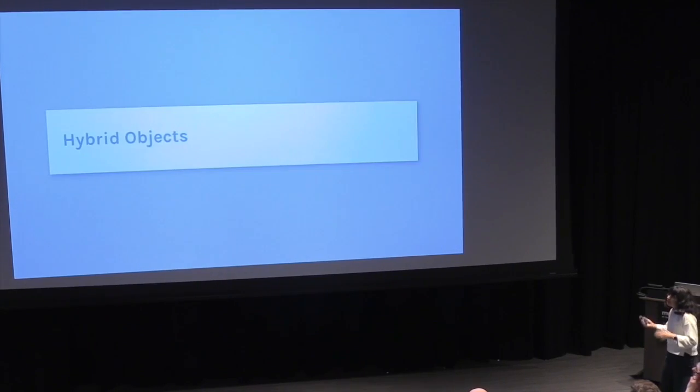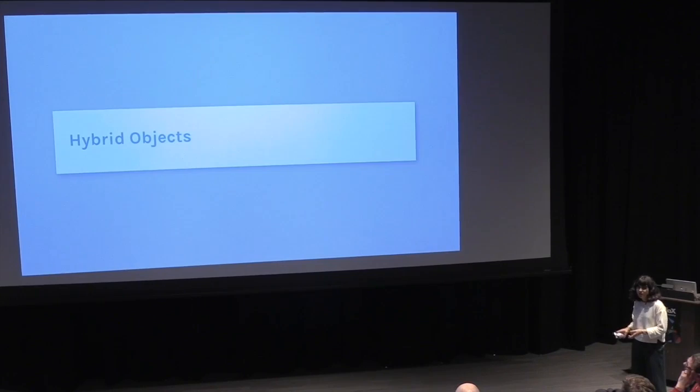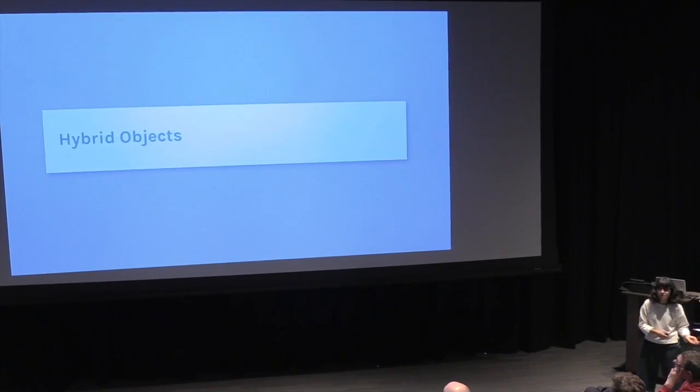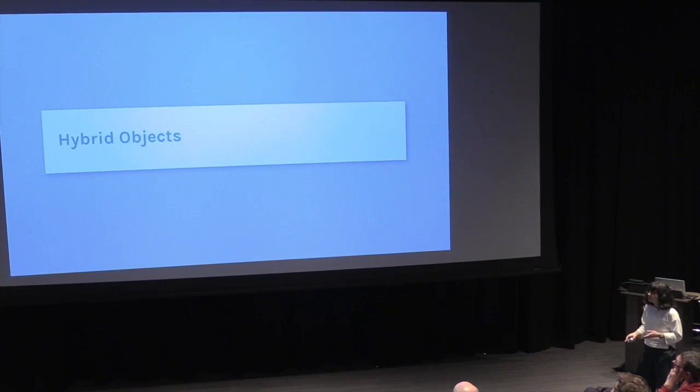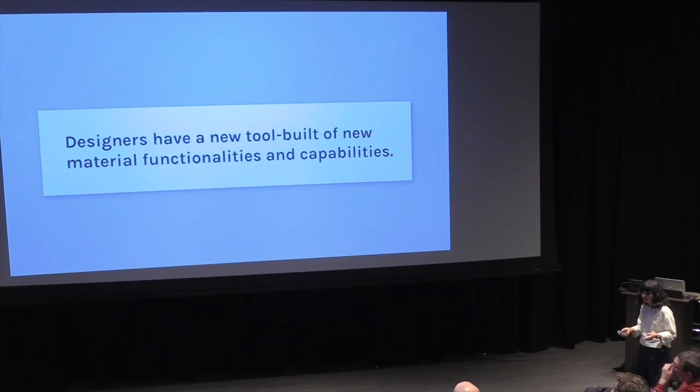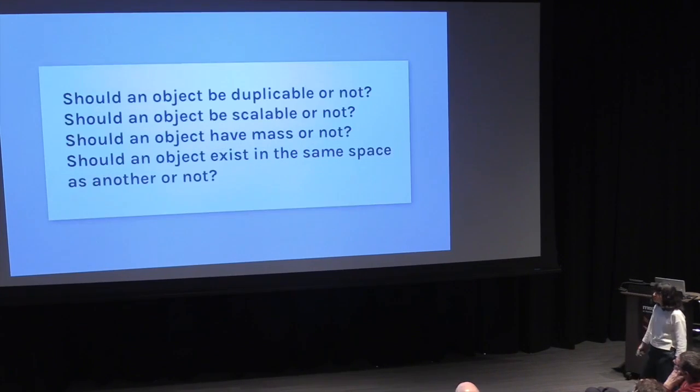So if these are old paradigms, how do we think about these kinds of new objects that are virtual, have new capabilities? Can we leverage these old paradigms? Should we leverage them? Well, these hybrid objects, in some ways, designers have the choice. So in some ways, they have a tool built. The box that I showed you where you can stack it, you can choose, depending on the context, that you can stack it or not stack it. So why would a designer want to do each one is kind of part of their tool belt of being able to do something. So it becomes more of a question. Should an object be able to be duplicable or not? Should an object be scalable or not? For what reason? Should an object have mass or not? Should it exist in the same space of another object? Should it be deleted and so forth?